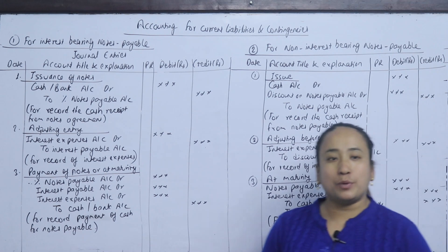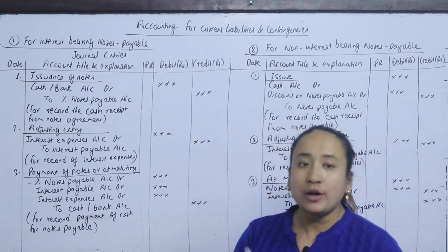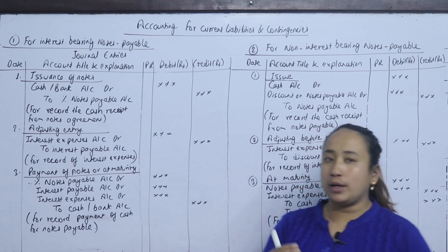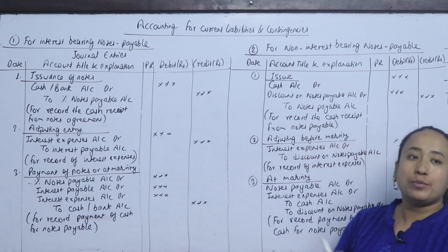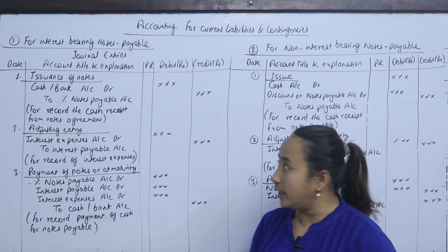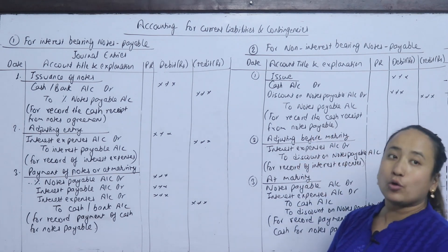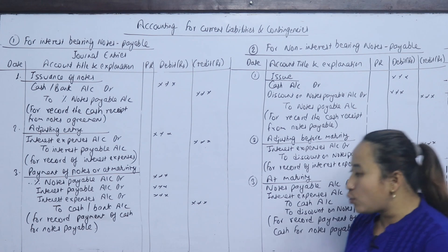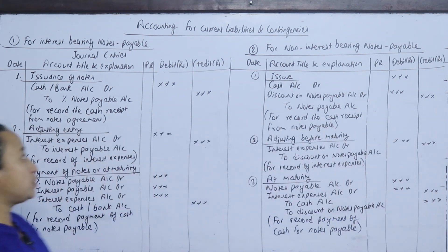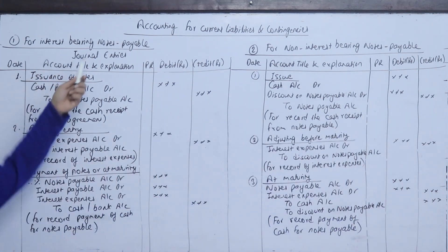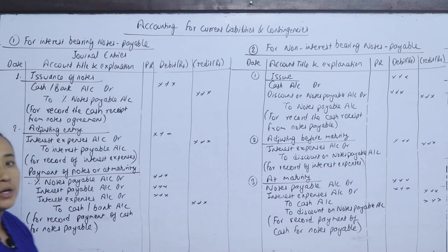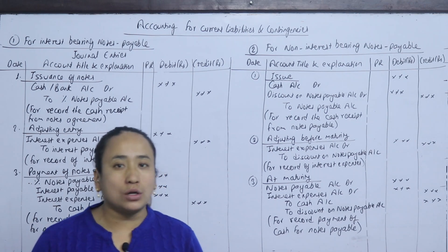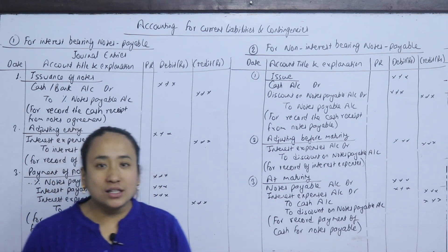What are current liabilities? In this chapter, we will learn about current liabilities — what are interest-bearing notes payable? We will discuss the types of notes payable and how loans are issued.